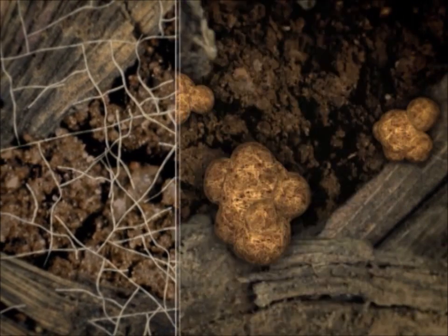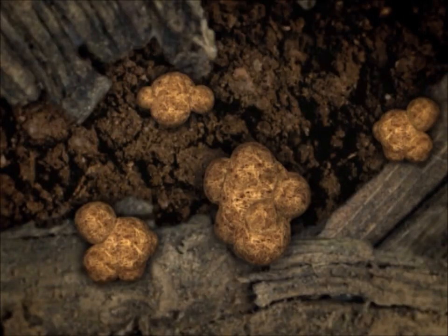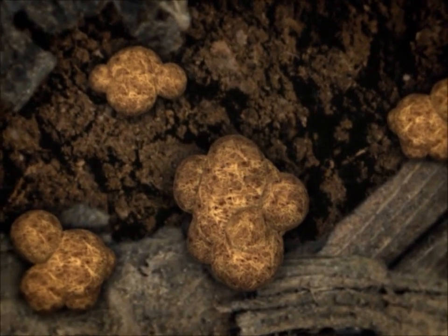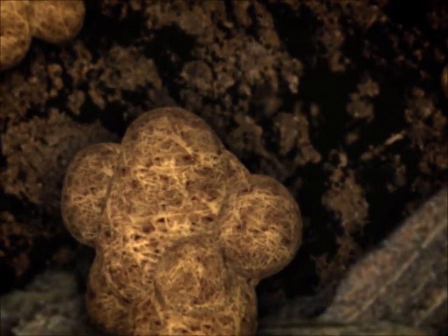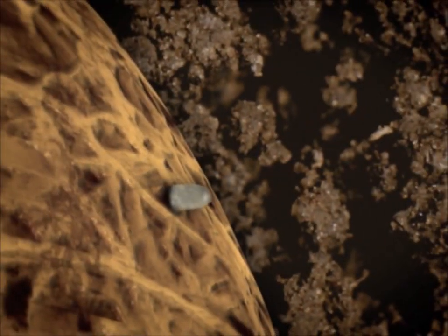But the fungus is also well prepared for adverse conditions. It forms compact structures consisting of tightly packed hyphae. These sclerotia can survive in soil for years until they finally germinate.